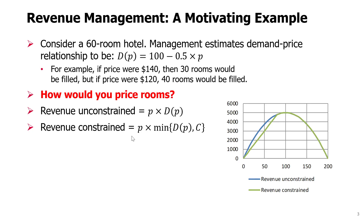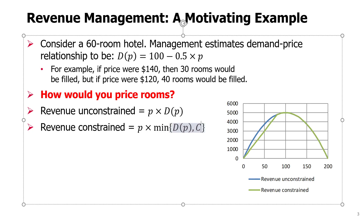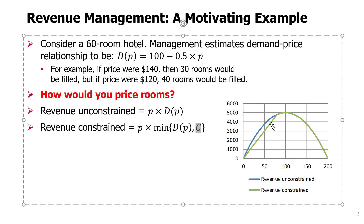If you consider the constrained revenue, it's the green line that is capped. It is capped because the moment you go with price $80 — half of 80 is 40, so 100 minus 40 is 60 — that is where demand exactly matches capacity. When you decrease this price further, demand exceeds 60 rooms, so the minimum switches from demand to capacity, giving slightly lower revenue for prices at $80 and below.